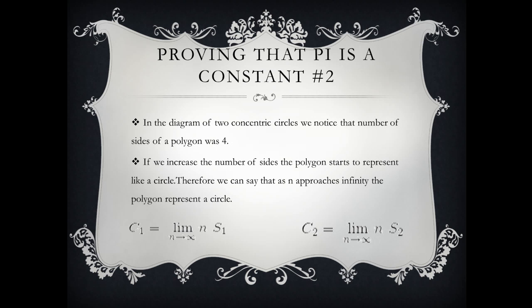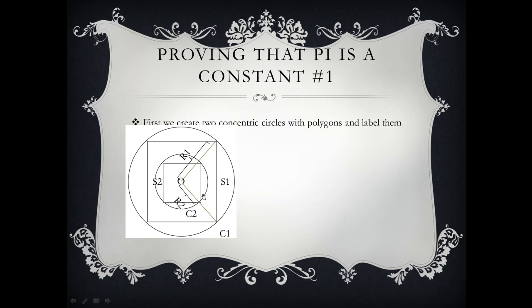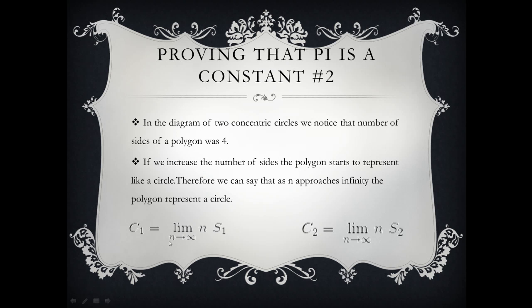So in mathematical way you would say it like this. C1 is just the circumference of the circle. This just means that as n approaches infinity.